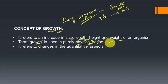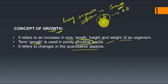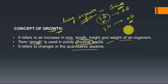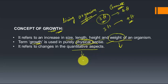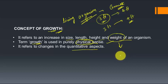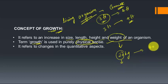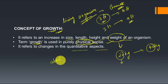Growth is a quantitative aspect. By quantitative, we mean we can assign a numerical value to it. For example, a person's height is three feet, which then increases to four feet — both are numerical values. Similarly, a child's weight of 20 kg increasing to 40 kg is another example. Quantitative aspects can be measured in absolute terms.